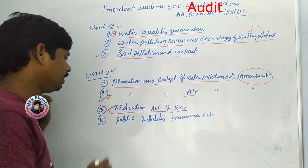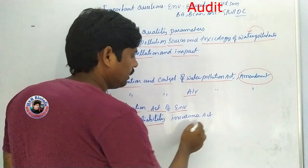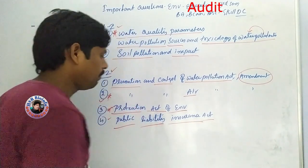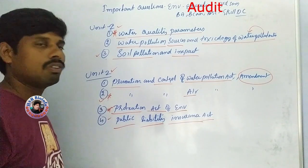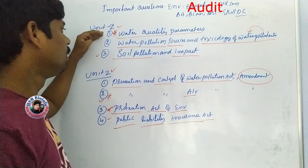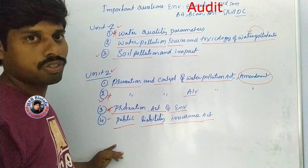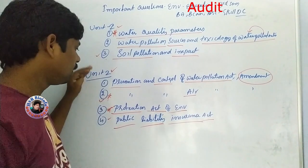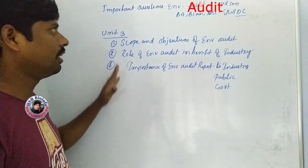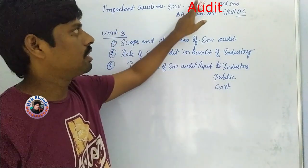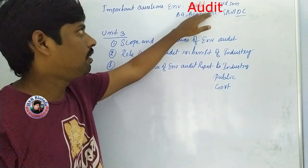Coming to the fourth important question is the Public Liability Insurance Act. Here we have the idea of environment education and environment qualifications.